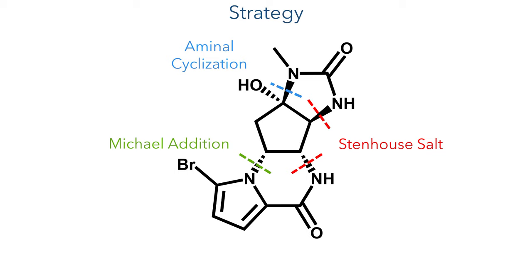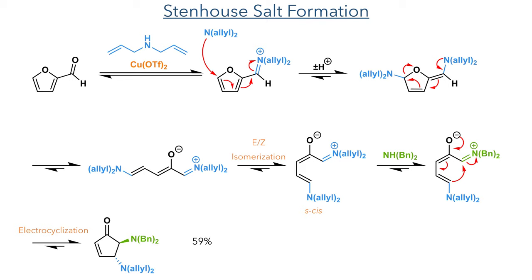So let's dive into the synthesis. This started with the formation of a Stenhouse salt. Furfural was reacted with diallylamine, which first undergoes a condensation with the aldehyde, forming an iminium intermediate. Another equivalent of allylamine then undergoes a 1,6-conjugate addition to produce a diamine intermediate. This is in equilibrium with an open-chain isomer that can undergo E/Z-isomerisation, adopting the S-cis conformation required for cyclisation.